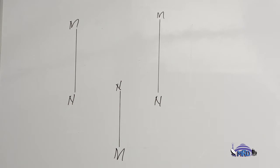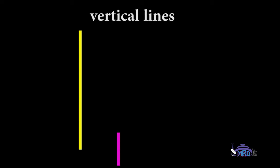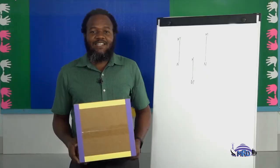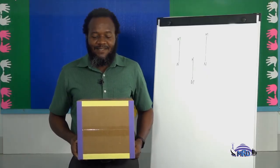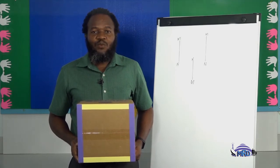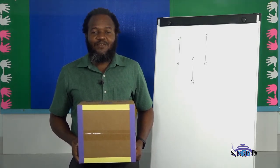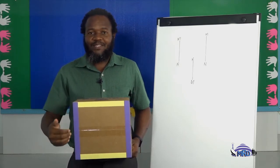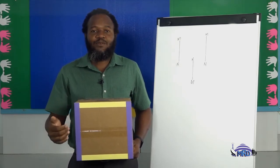Remember that vertical lines are straight lines which go from top to bottom or bottom to top, from north to south or south to north. From the box that I have in my hand, can you tell me which of these lines are vertical lines? If you selected the purple lines, then you are absolutely correct.